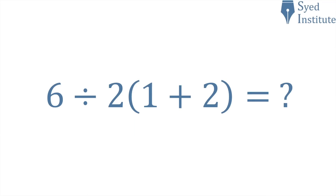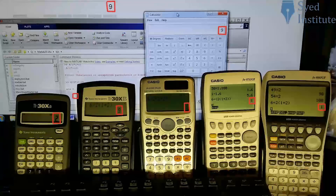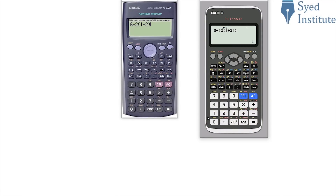In this video we are looking at the problem 6 divided by 2(1+2), which always seems to cause huge debates. What's interesting is that even different calculators are giving different answers — mainly getting either 9 or 1. Even my own two calculators give different answers. So which answer is actually correct? That's what we'll be looking to find out.